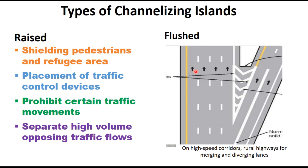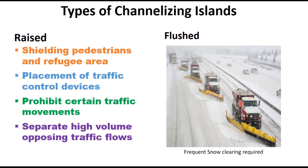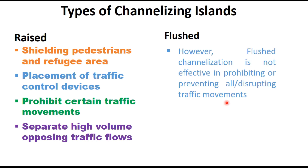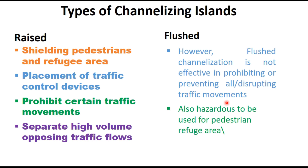Flushed type channelizing islands are provided on high-speed corridors, rural highways, or expressways for merging and diverging lanes. They can also be provided where frequent snow clearing is required, in areas with space constraints particularly in urban areas, or when temporary channelization is needed before construction. However, flushed type channelizing islands are not effective in prohibiting or disrupting traffic movements, and are also hazardous for pedestrians or for use as a refuge area.